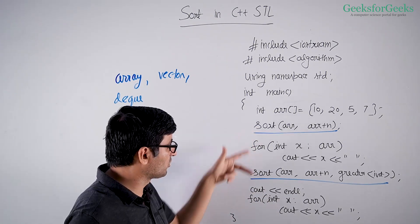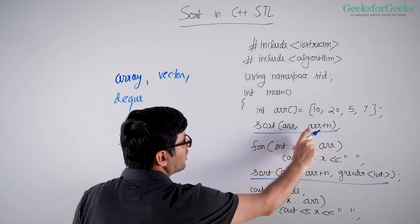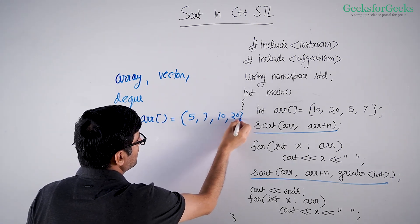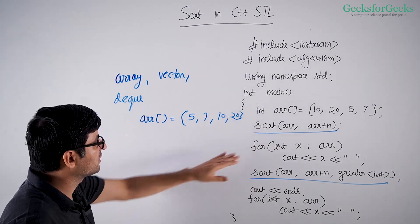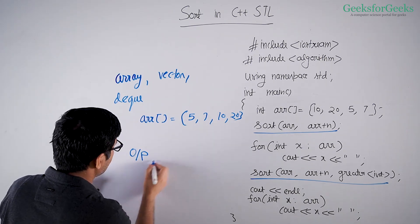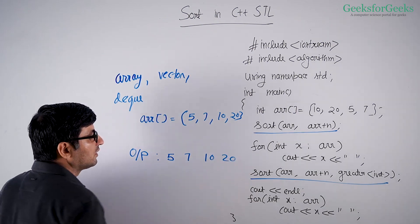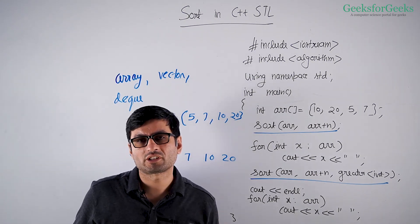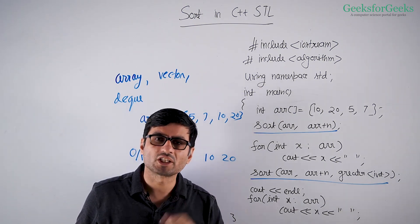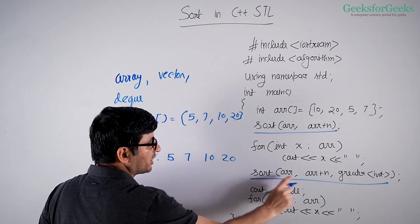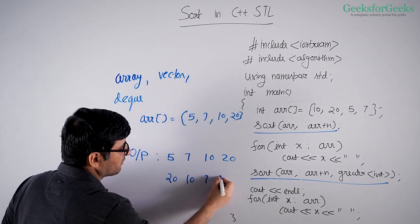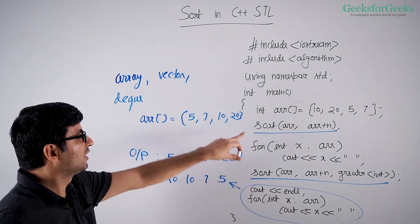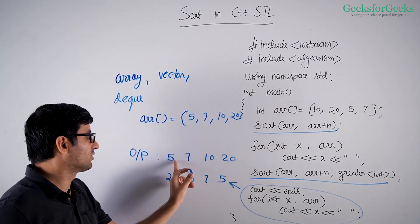Let's predict the output of a program. The first sort call changes the array to 5, 7, 10, 20, so the output is 5 7 10 20. Then we call sort again with the greater<> function as a parameter. The greater<> function causes sort to compare elements such that the greatest element comes first, so the output becomes 20, 10, 7, 5 — sorting the array in decreasing order.